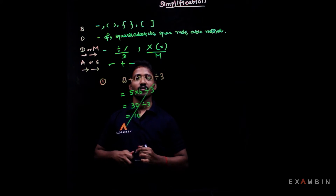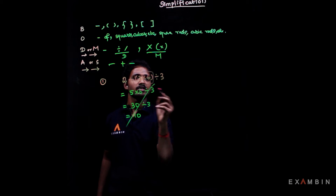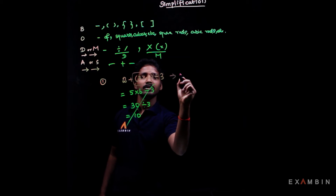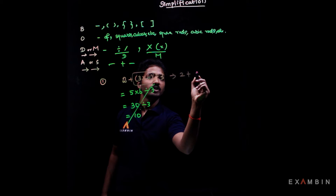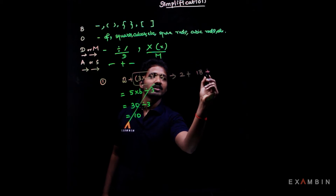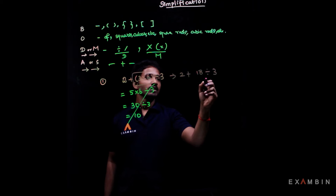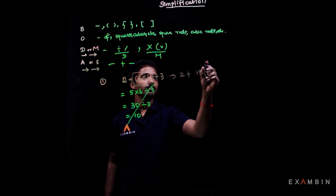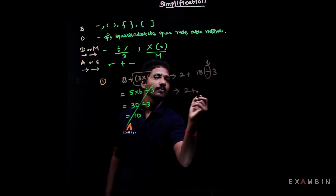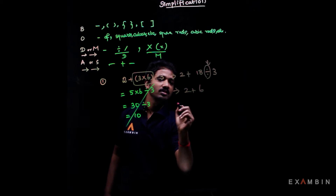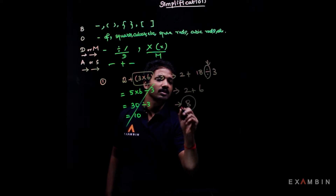As per the BODMAS rule, first we need to remove the brackets. So it becomes 2 plus 3 into 6, which is 18, divided by 3. Looking at BODMAS again, division gets higher priority. So it's 2 plus 18 divided by 3, which is 6, and 2 plus 6 equals 8. So 8 is the correct answer.